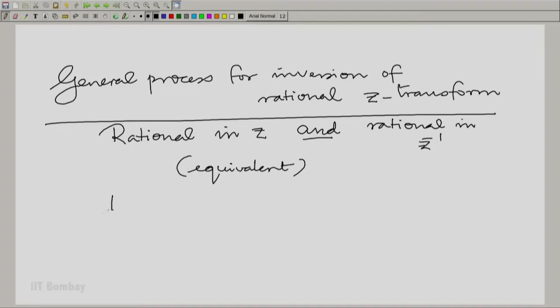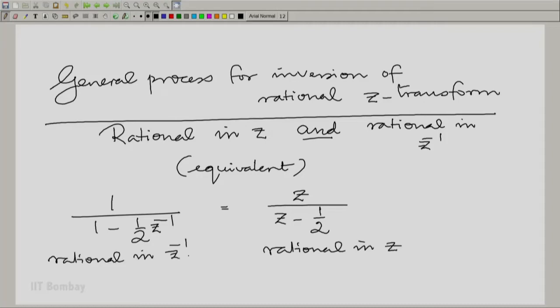For example, you could think of 1 by 1 minus half Z inverse also as, by multiplying both numerator and denominator by Z, Z by Z minus half. So, it is rational in Z and also rational in Z inverse; they are equivalent. Now, what we can do is to take one of them with which we are more comfortable. So, let us take the rational in Z inverse interpretation. That means we will always write down the particular Z-transform as a rational function in Z inverse.